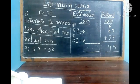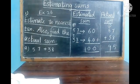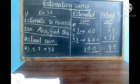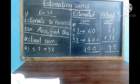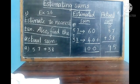The nearest 10 of 57 is 60 and the nearest 10 of 38 is 40. Now we sum the two numbers: 60 + 40 = 100. The estimated sum is 100 and the actual sum is 95. 95 and 100 are close, so our answer is correct.